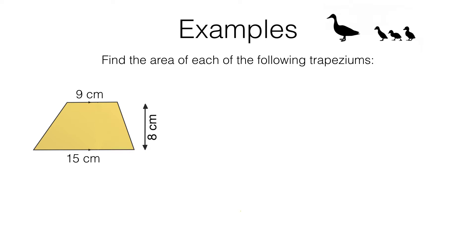Then what I'm going to do is split this trapezium into two triangles. I can do that either by joining this pair of opposite vertices or this pair of opposite vertices. It doesn't matter which pair I choose, so I'm going to choose this pair here.